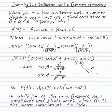When you sum two oscillations with a common frequency, you can always represent that as a single oscillation. It's got the same frequency. Why is that the case?